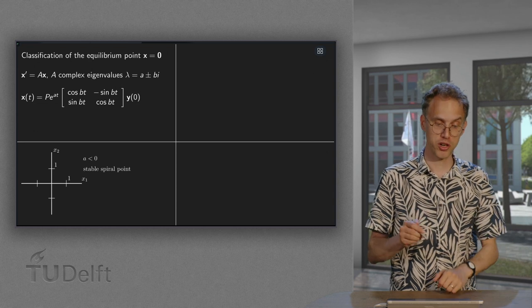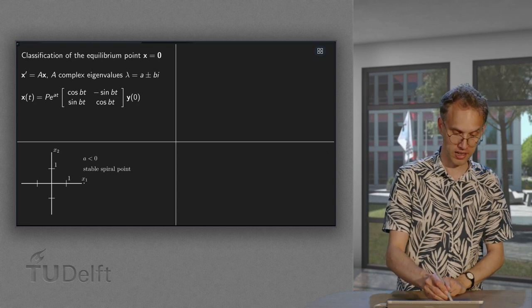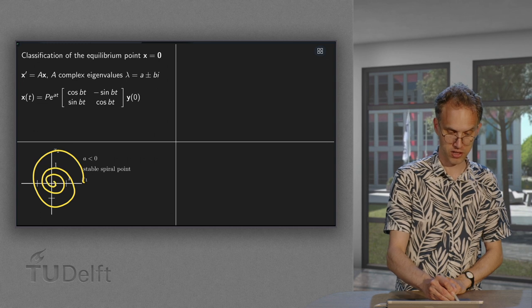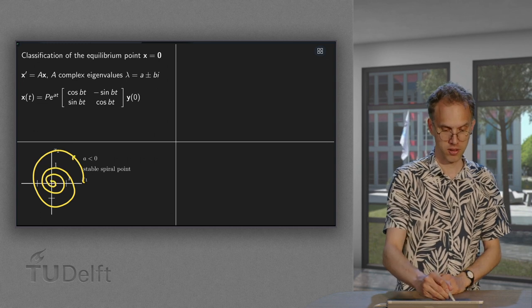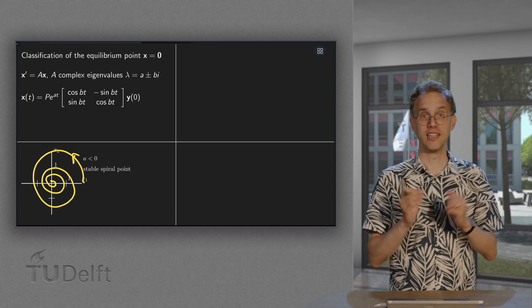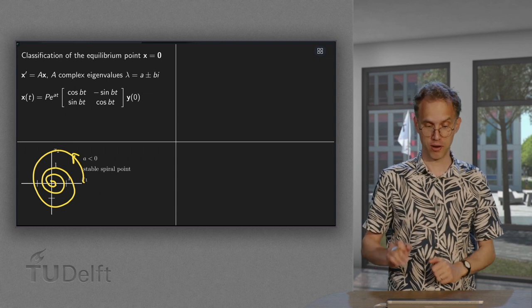So we are rotating towards the origin, so we get something like this, rough sketch. So there we go and this is called a stable spiral point.